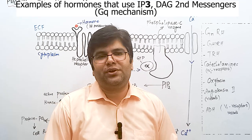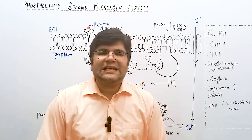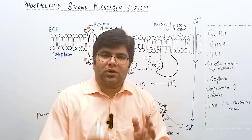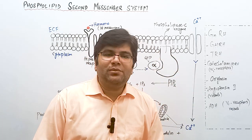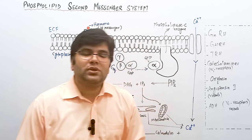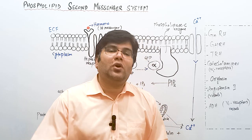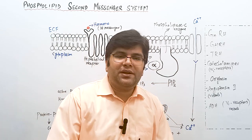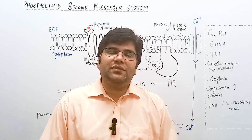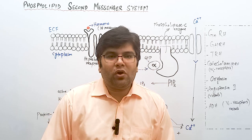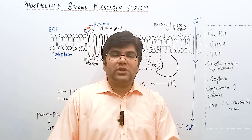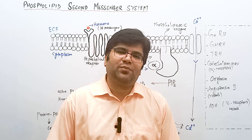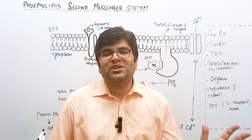Both the phospholipid and cyclic AMP second messenger systems are used by water-soluble hormones. These hormones affect already-present proteins inside the cell by modifying their phosphorylation — either activating or inhibiting them. Lipid-soluble hormones, on the other hand, act on the nucleus and by affecting transcription they can either increase or decrease the synthesis of proteins.